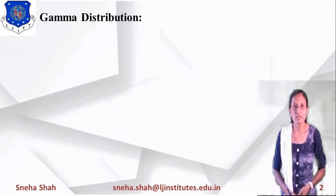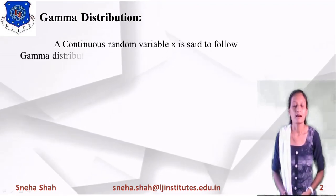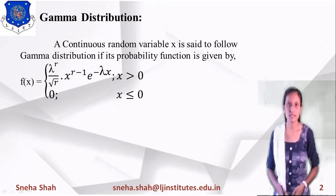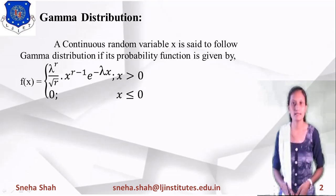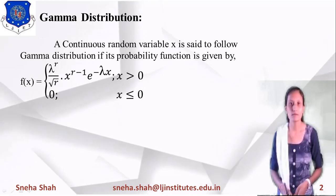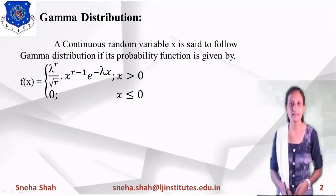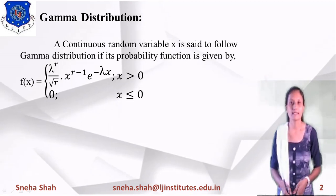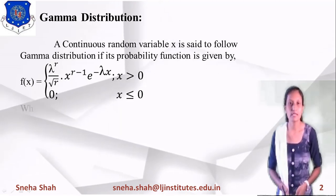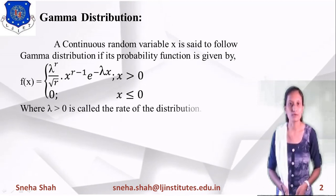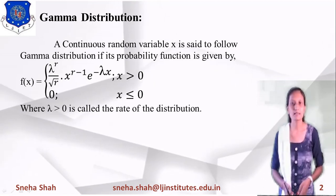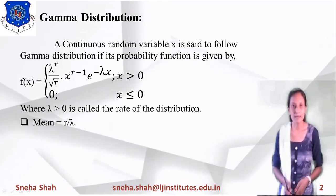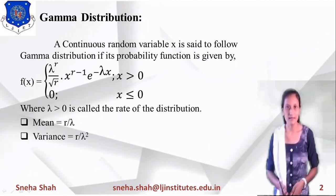First of all, what is gamma distribution? A continuous random variable x is said to follow gamma distribution if its probability density function is given by f(x) = λ^r / Γ(r) · x^(r−1) · e^(−λx), for x greater than 0, and 0 otherwise, where λ greater than 0 is called the rate of the distribution. The mean value for gamma distribution is r/λ, and the variance equals r/λ².